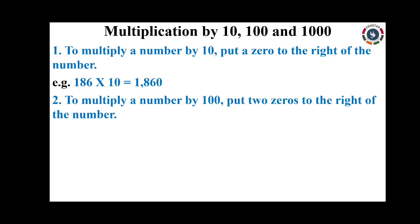Second, when we multiply a number by 100, put 2 zeros to the right side of that number. For example, 186 into 100 — put 2 zeros to the right side of 186. So 186 into 100 equals 18600.